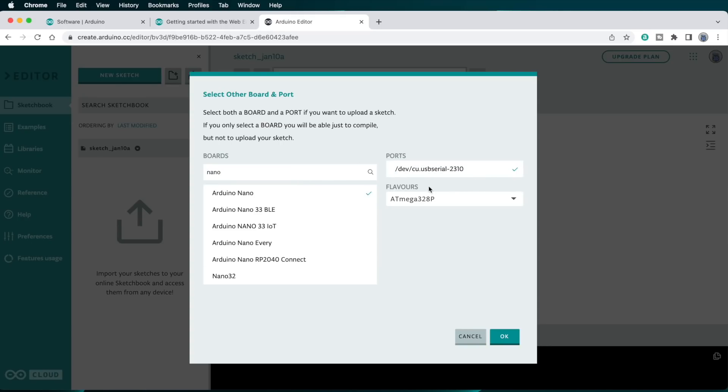Then, select the port it's connected to from the ports list. On the Mac, this will be some sort of CU.USB serial thing, and on Windows, it'll probably be a COM port. For the Nano included in the Alien 3D UFO box, set its flavor to ATmega328P old bootloader. Click the OK button to finish.